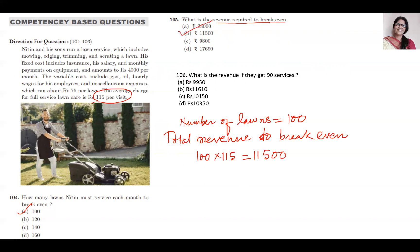Now coming to question 106. What is the revenue if they got 90 services? Again, it is very simple: 90 multiplied by 115. From each service he is getting 115—this is revenue. This will be 10,350. B is the answer.